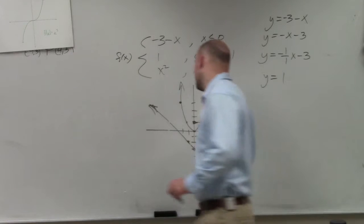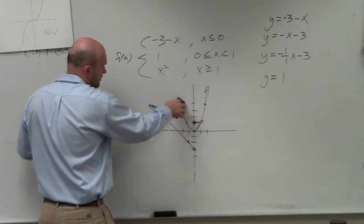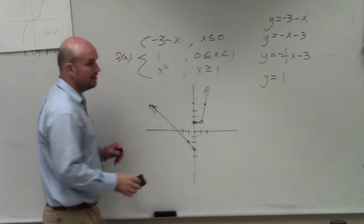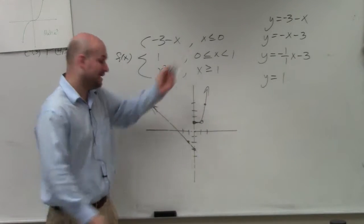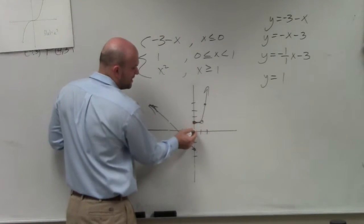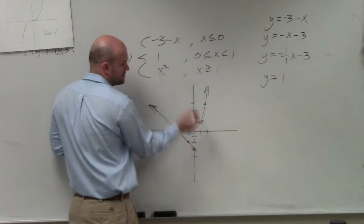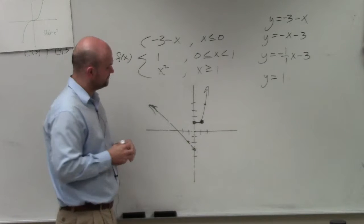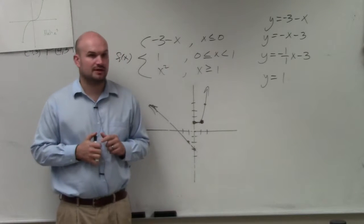Then it says, graph x squared for all values greater than or equal to 1. So any value that's greater than or that's less than 1, I'm just going to erase. However, it's greater than or equal to, so if you remember, the equation x squared goes over 1, up 1, so that is a point, so that's going to be filled in. So that's what your graph would look like.